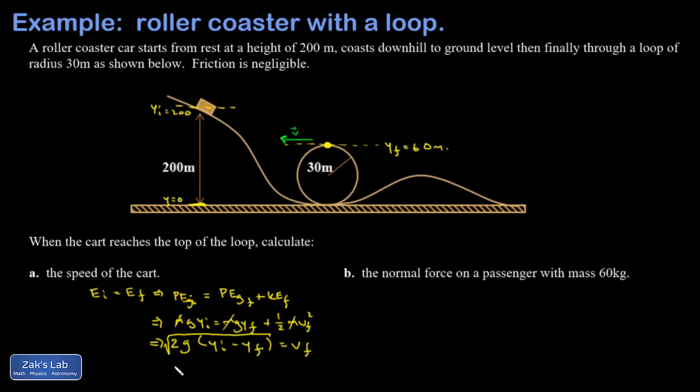And I've got v final, and if I plug in all those numbers, so it's the square root, 2 times 9.8 times 200 minus 60. I get an approximate value of 52.4 meters per second. And I'm beginning to suspect this roller coaster isn't safe. That's pretty fast.